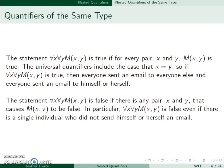The statement ∀x∀y M(x,y) is false if there's any pair that causes this to be false. So even if there's a single individual who did not send himself or herself an email, or a single individual that didn't directly communicate with one other person, this would be false.